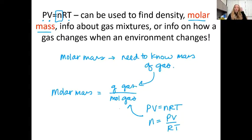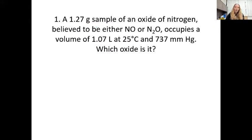So that's kind of an introduction. And I want to go through and do an example with you. A 1.27 gram sample of an oxide of nitrogen - so that means it's a compound that has oxygen in it and nitrogen, and we're just not sure how much of each. But our chemists believe it to be either NO, nitrous oxide, or NO2, dinitrogen oxide.